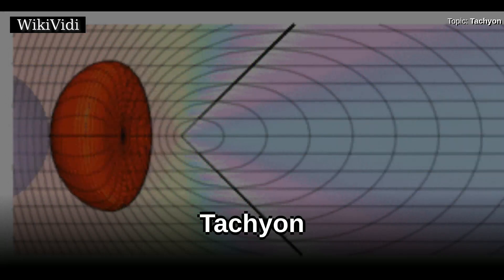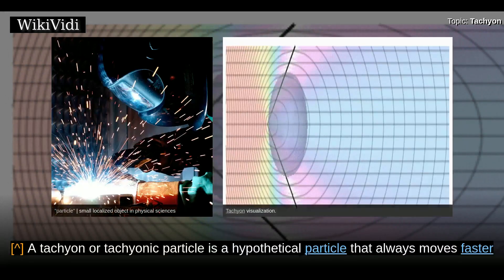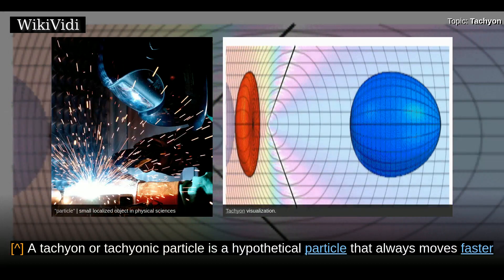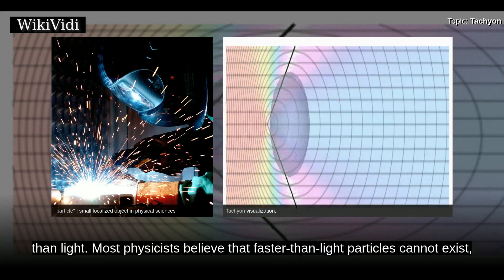Tachyon. A tachyon, or tachyonic particle, is a hypothetical particle that always moves faster than light.